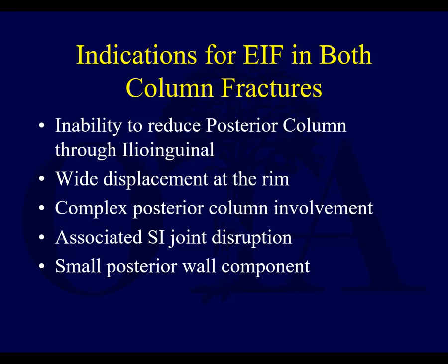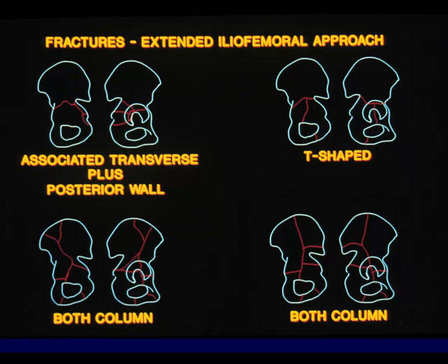Indications for this in both column fractures include inability to reduce the posterior column through the ilioinguinal — perhaps a segmental posterior column fracture that doesn't look reducible from the ilioinguinal approach, although the ilioinguinal does give you some exposure of the posterior column. If you have very wide displacement at the rim, complex posterior column involvement like a segmental posterior column, associated SI joint disruption, or a small posterior wall component that needs to be reduced — a real posterior wall you need to get after — these are fracture types where you may need to do an extended iliofemoral.